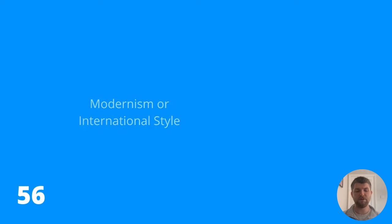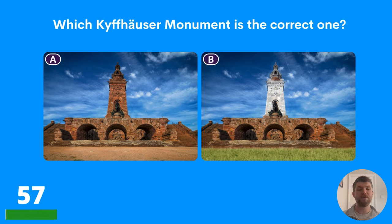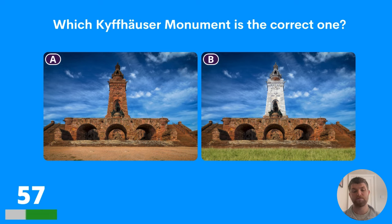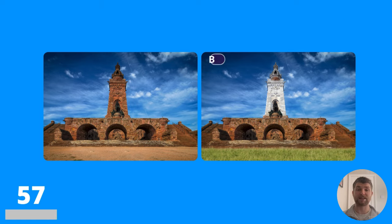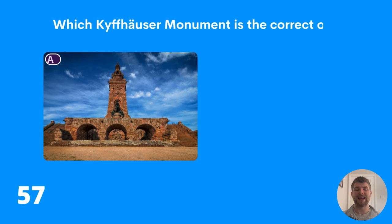Question fifty-seven: which Kyffhäuser monument image is the correct one — A or B? The correct image is A.